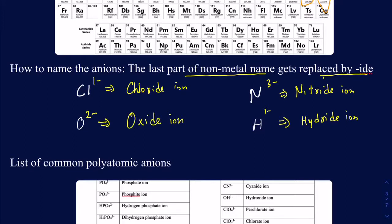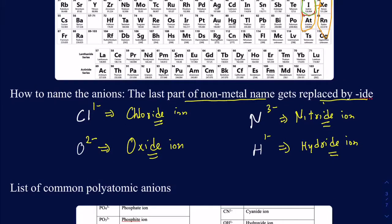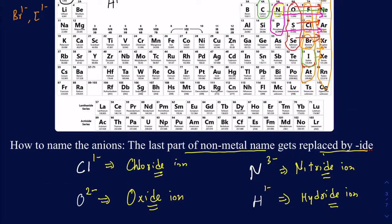The bottom line is: you keep the base name for the element, but the last part of the element name gets replaced by '-ide' when naming these anions. So sulfur becomes sulfide, selenium becomes selenide, phosphorus becomes phosphide, and so on.